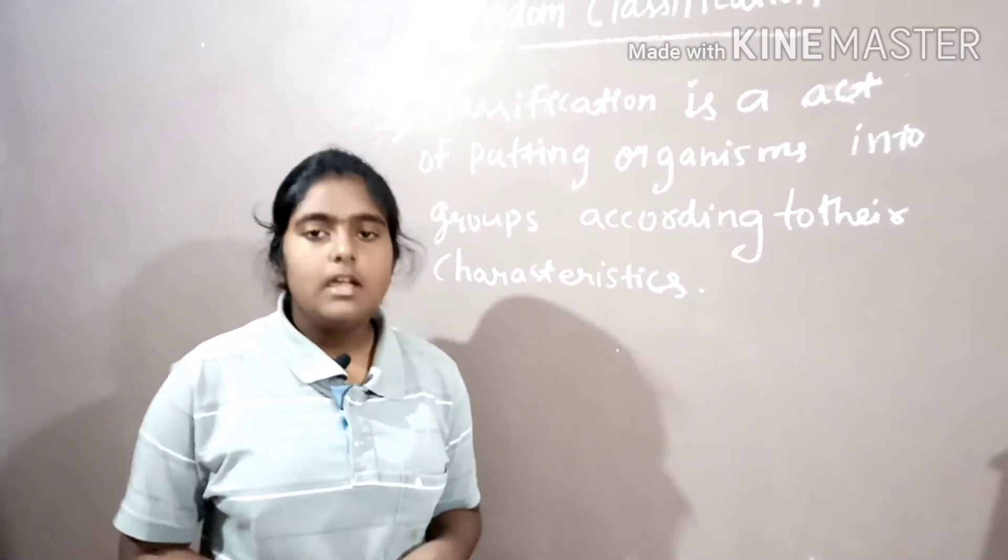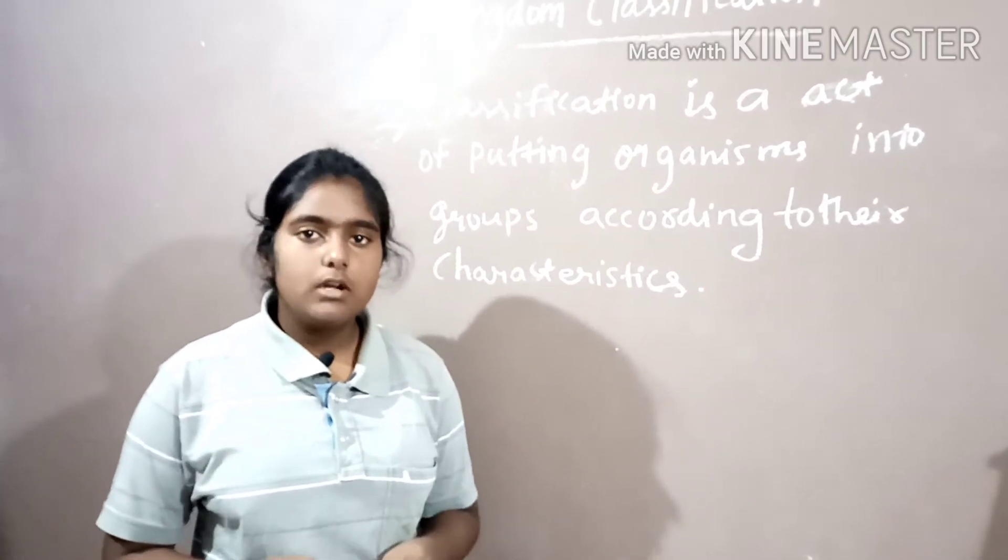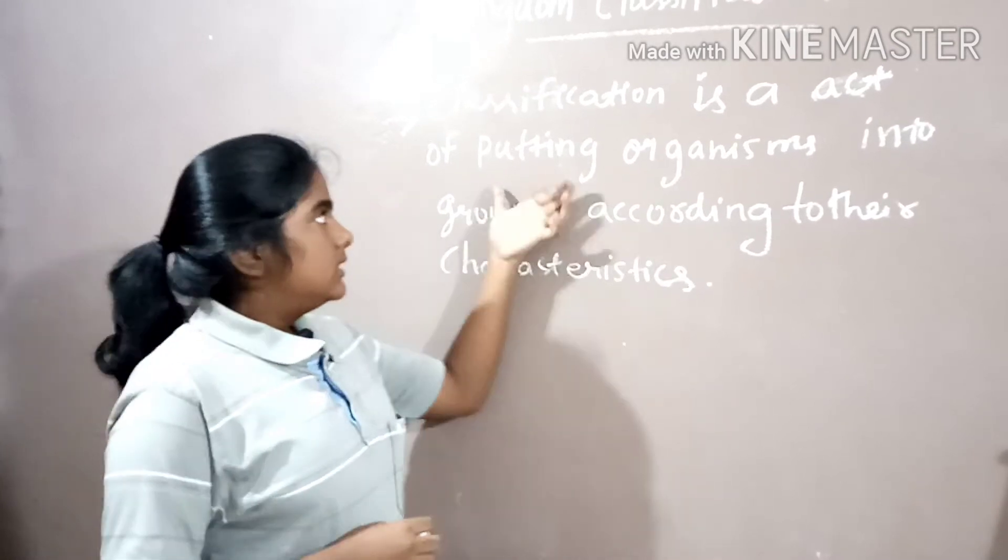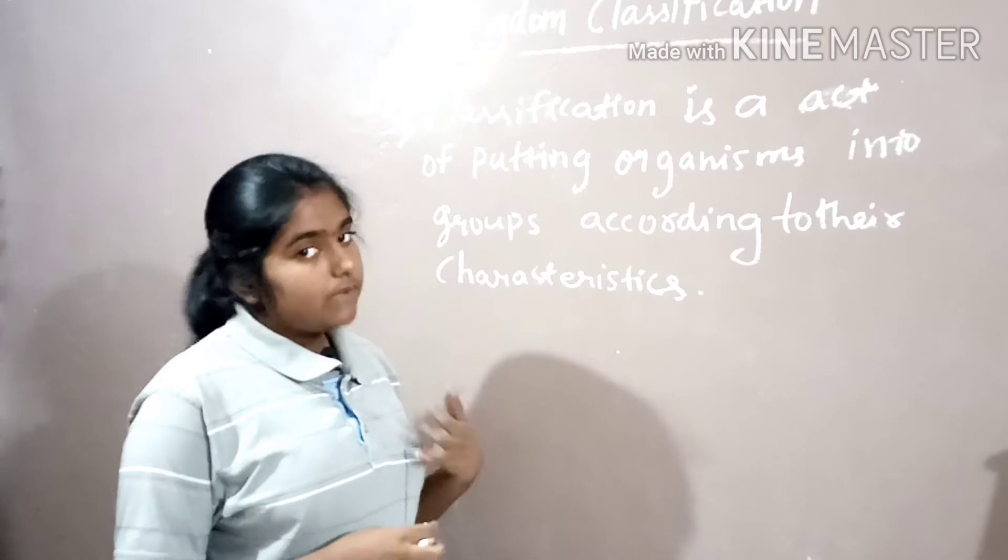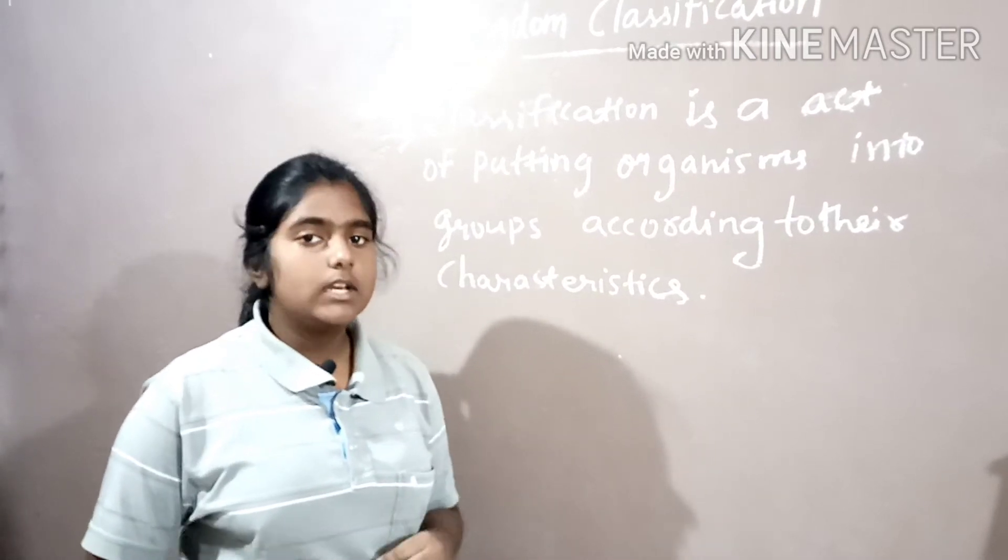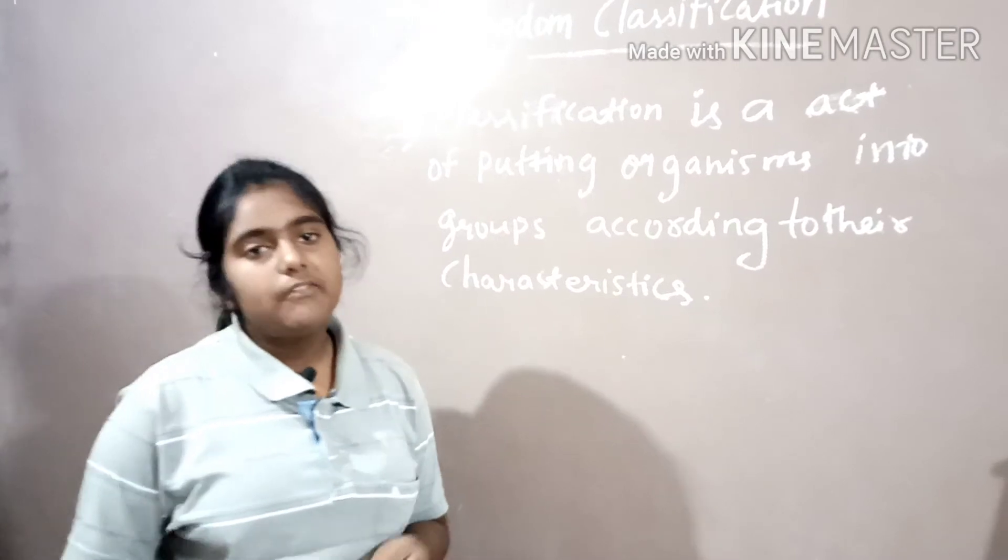For example, in libraries the books are kept author-wise or subject-wise for our convenience, so that we can choose any book we want. Classification is also made so that we can study the living organisms in a simpler and easier manner.